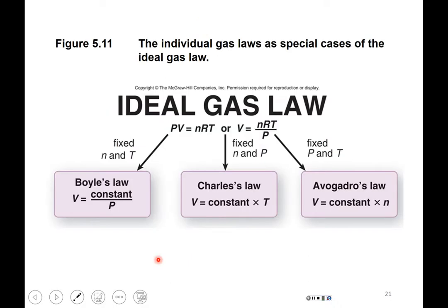If you're curious where the individual laws came from: holding n and T constant in PV = nRT gives P×V = constant, which is Boyle's Law. Holding n and P constant gives V = (nR/P)×T, which is Charles's Law. Holding P and T constant gives V = (RT/P)×n, which is Avogadro's Law.